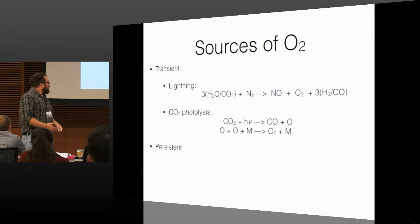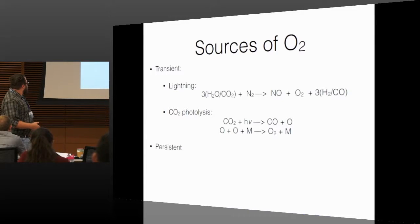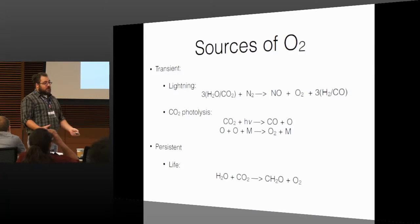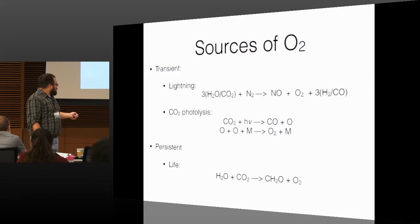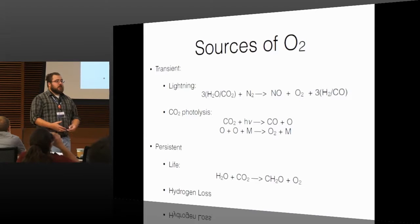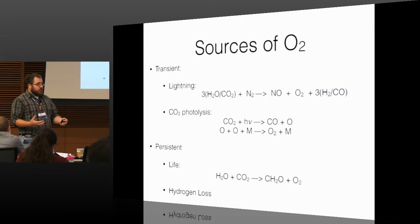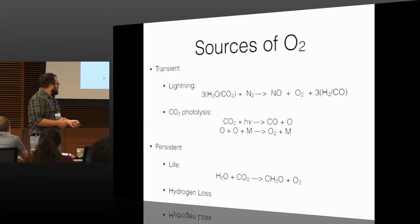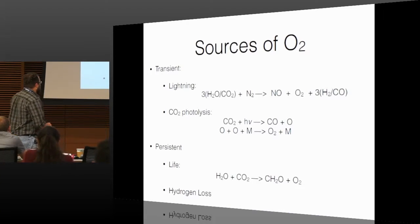More persistently, however, we have life, which takes water and CO2 and makes organic carbon, which is buried in sediments, and gaseous O2, which is allowed to accumulate in the atmosphere, or through hydrogen loss. So, for example, early Venus probably lost most of its oceans through the photolysis and subsequent loss of hydrogen to space, leaving behind large amounts of oxygen, which subsequently reacted to the solid planet. It's gone today, although there is a little photochemical oxygen left over in the Venusian atmosphere.